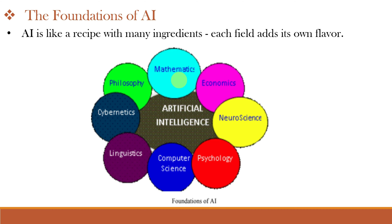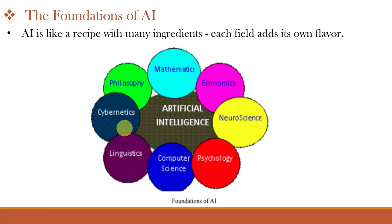Let us start. In this figure, we can see different disciplines that contribute to Artificial Intelligence, and AI takes inputs from all of them — each field adds its own flavor to Artificial Intelligence. Some of the important disciplines that contribute ideas, viewpoints and techniques to AI are Philosophy, Mathematics, Economics, Neuroscience, Psychology, Computer Science, Linguistics, Cybernetics, and more. Let us understand all of these one by one.